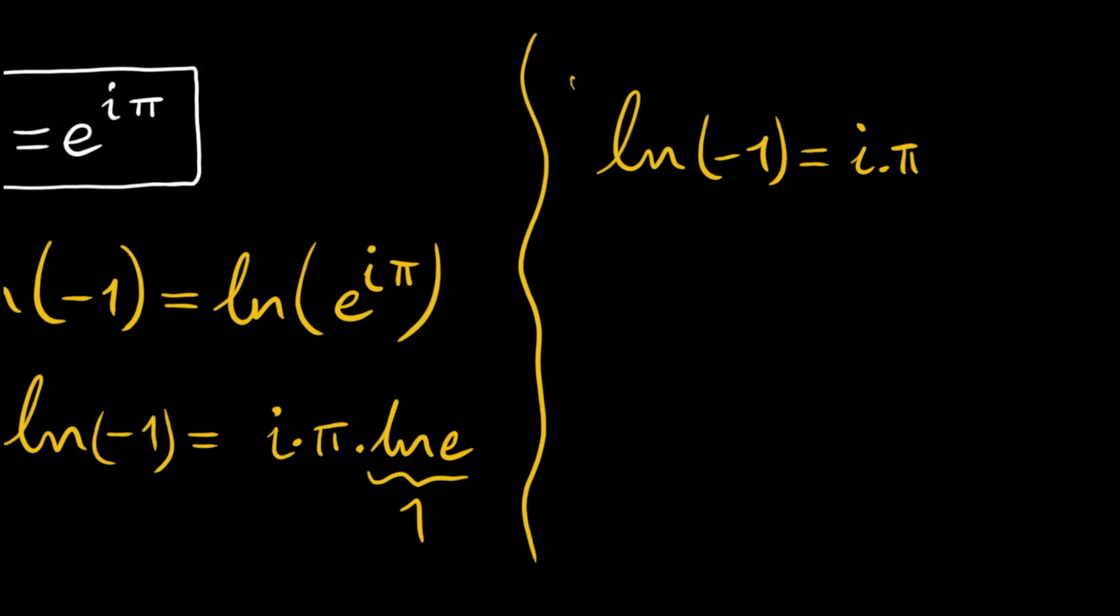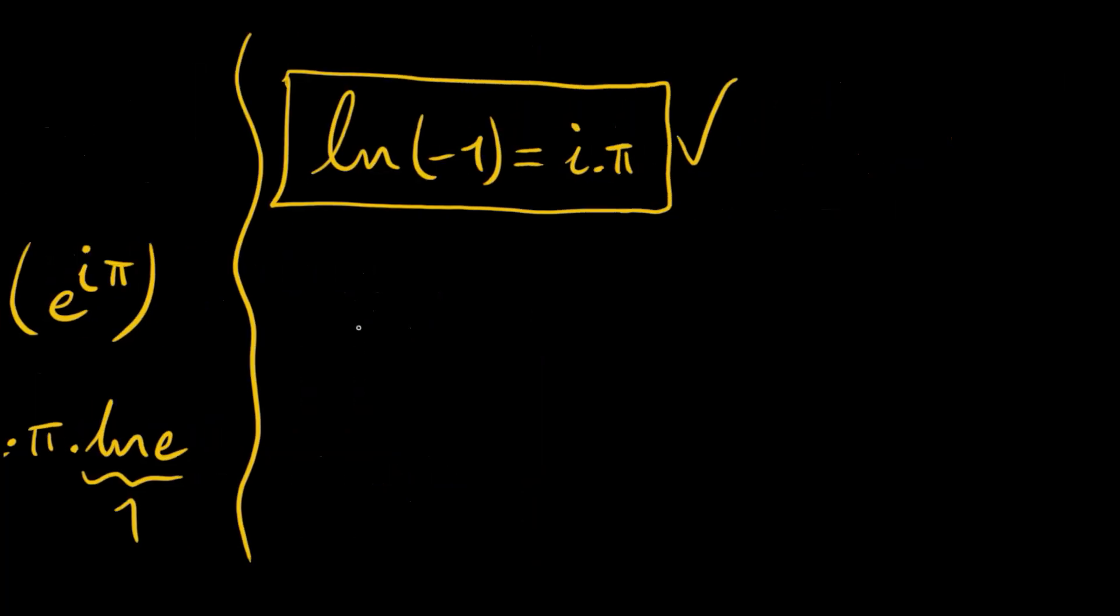This is the principal solution. Actually, we should have said that negative 1 is equal to e to the power of i times pi plus 2 pi n, or m, m being an integer.